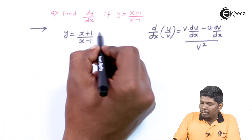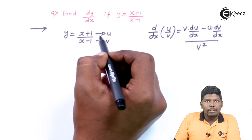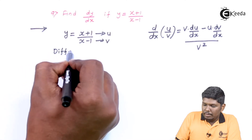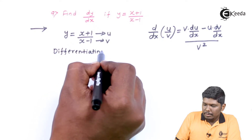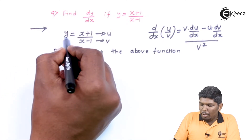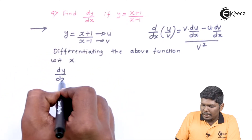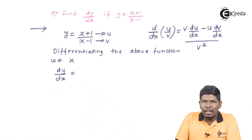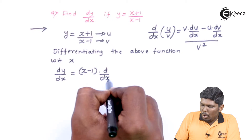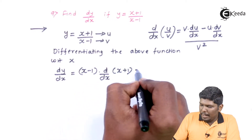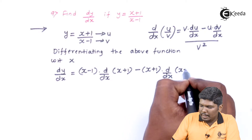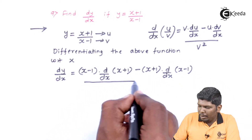We have y = (x + 1)/(x - 1). The numerator will be u and the denominator will be v. Differentiating with respect to x, dy/dx equals v as it is — that is (x - 1) — into derivative of u, which is (x + 1), minus u as it is — (x + 1) — into derivative of v, which is (x - 1).